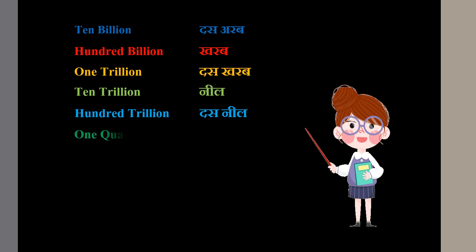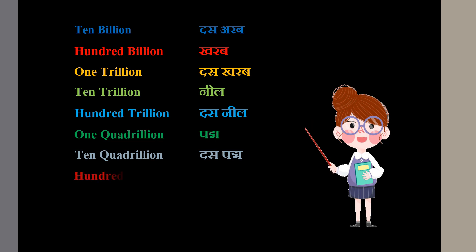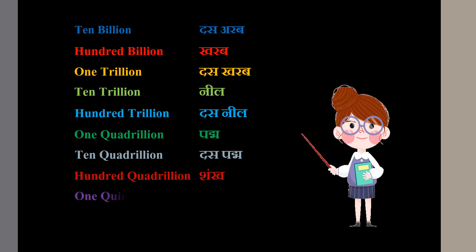1 quadrillion means Padma. 10 quadrillion means 10 Padma. 100 quadrillion means Shank. 1 quintillion means 10 Shank.